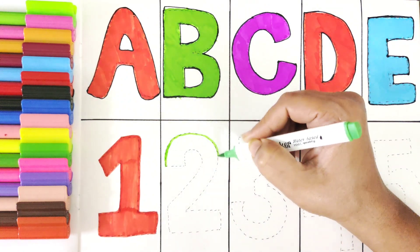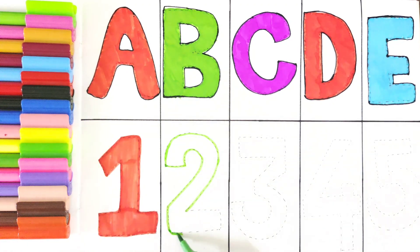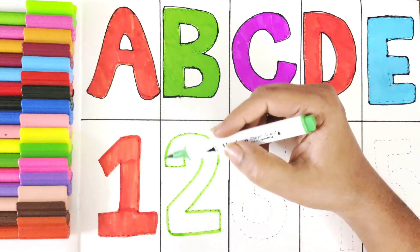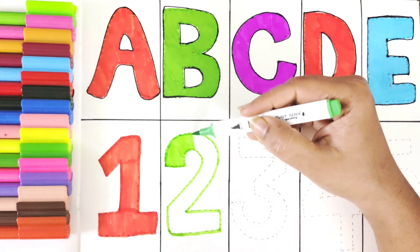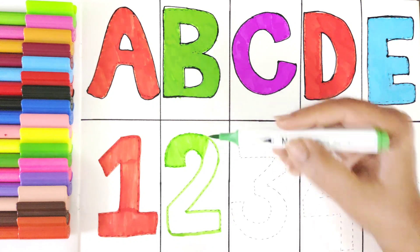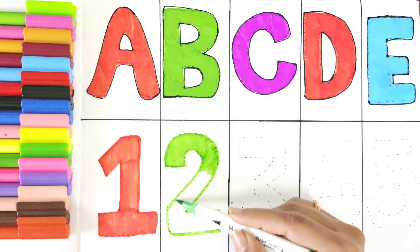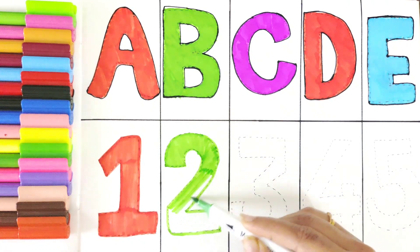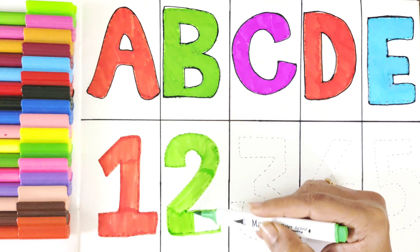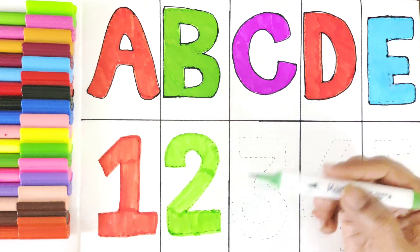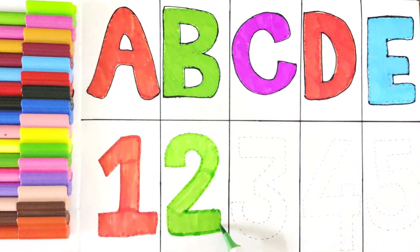Now number 2 with parrot green color. I have finished sketching the border. Now let's fill in the color. Do you also like filling in colors? Please tell me by liking the video and please do subscribe to my channel Happy Colors. Our number 2 in parrot green color is ready.